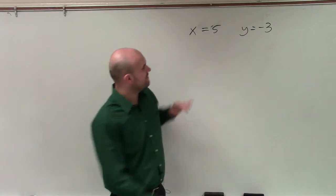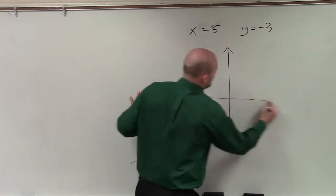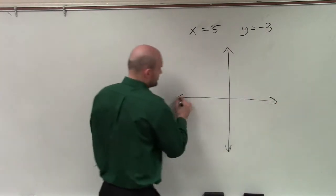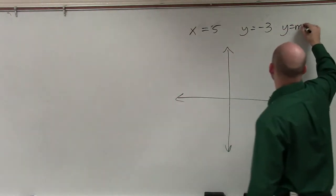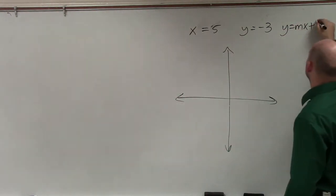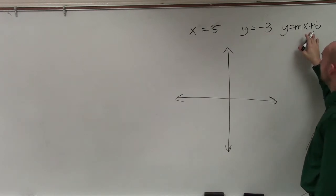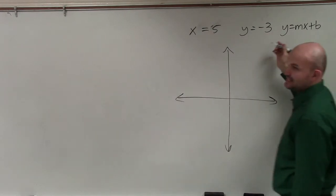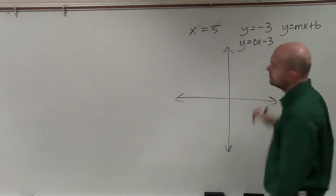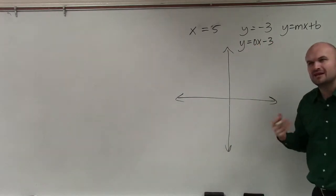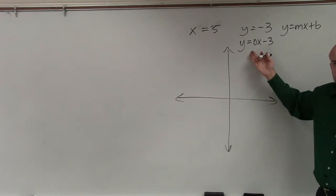If I was going to graph — let's say I wanted to graph both of these. Now for y equals, this one isn't that bad because we can replicate it in slope-intercept form. Obviously, you see there's no x here, so therefore m has to be 0, and b equals negative 3. But a lot of students have trouble when trying to compute the slope when the slope is 0.